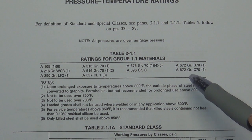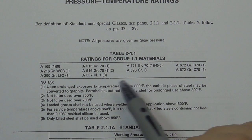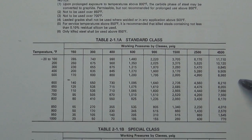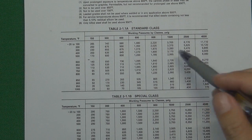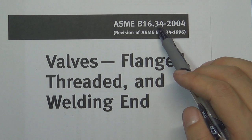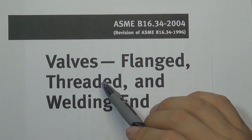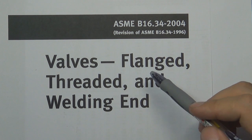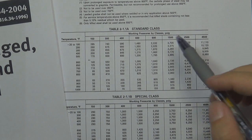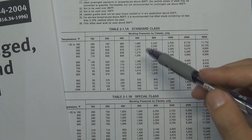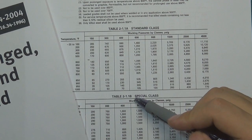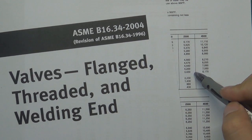When you check the pressure-temperature reading table, first verify you are looking at the correct material group for your use. Next, within one material group, the table is divided into two tables: Table A and Table B. This is because ASME B16.34 covers three kinds of valve connections — flange, thread, and widening. Thread and widening connections are stronger than flange connections, so Table A is for flange connection valves and Table B is for thread and widening connection valves, making the data more accurate.